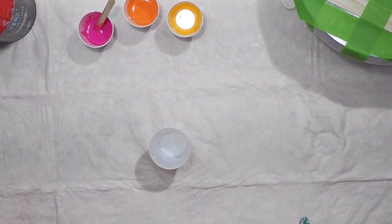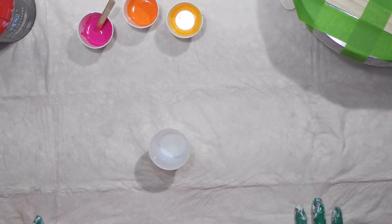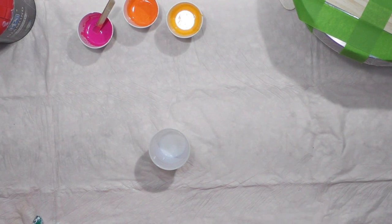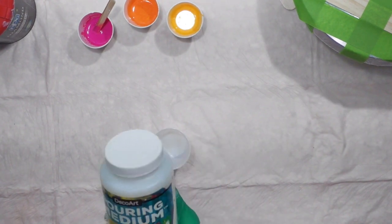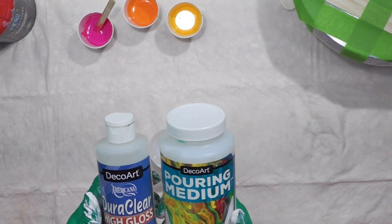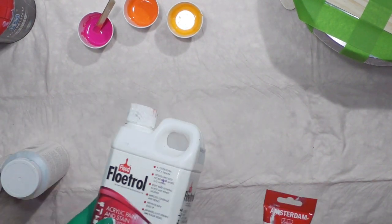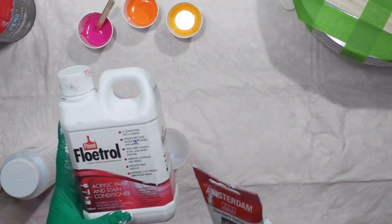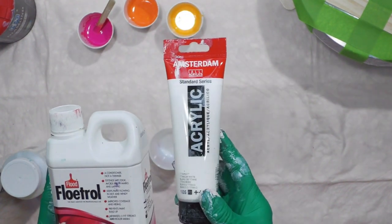Hey everybody, I hope you're doing well. I am going to do Blooms. I'm going to try it using DecoArt Pouring Medium and High Gloss Varnish together as my pouring medium. The cell activator would be Australian Floetrol and Amsterdam Titanium White.